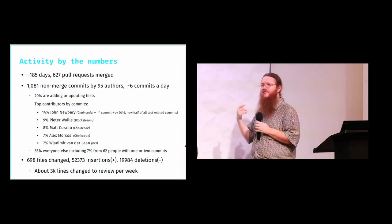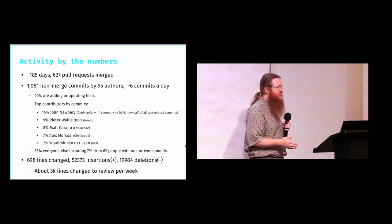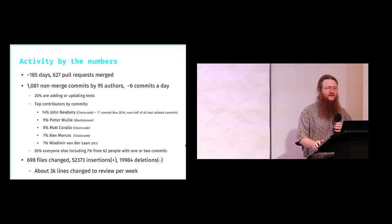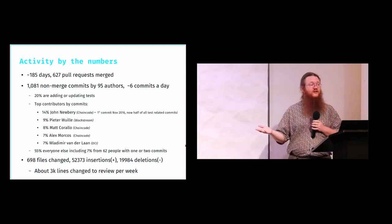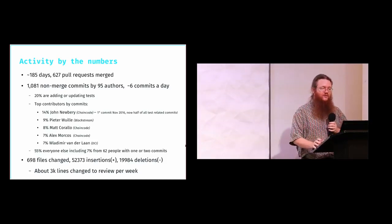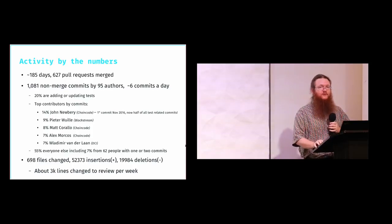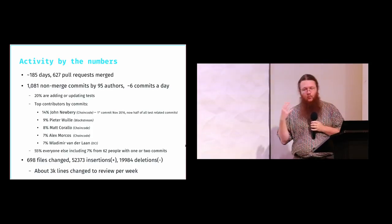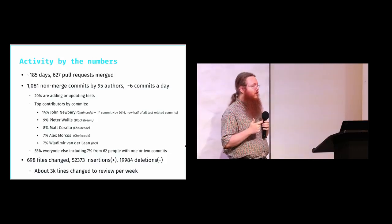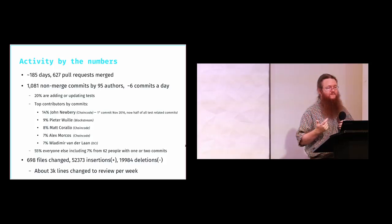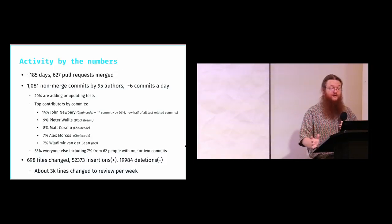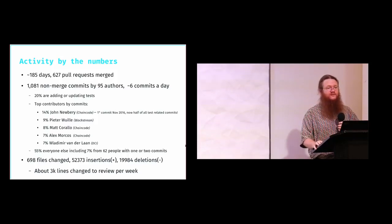Just some raw numbers on activity in Bitcoin development. Over the last 185 days — the development cycle of 0.15 — there were 627 pull requests merged on GitHub. Those requests contain 1,081 non-merged commits by 95 authors, which comes out to 6 commits a day, which is pretty brisk compared to some other cryptocurrency projects but not overwhelming. One interesting thing about 0.15 is that 20% of the commits are test-related. A lot of those came from John Newberry, a relatively new contributor who works at ChainCode, whose first commit was back in November 2016. He was responsible for half of all the test-related commits and was also the top committer in this release.